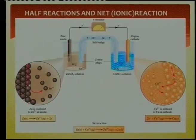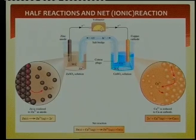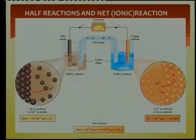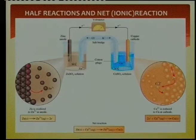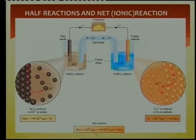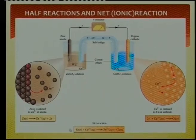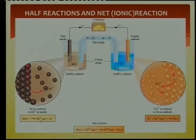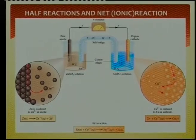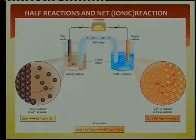Here's the copper side. Electrons come down via the external circuit through the high-resistance voltmeter into the copper cathode. The copper ions in solution from copper sulfate grab those electrons and become copper, depositing onto the electrode. Adding the two half reactions together and cancelling the two electrons, I get my complete net reaction without electrons — this is the net reaction.